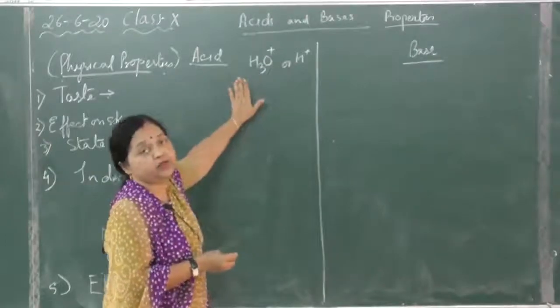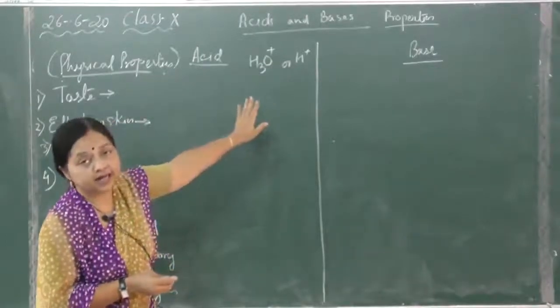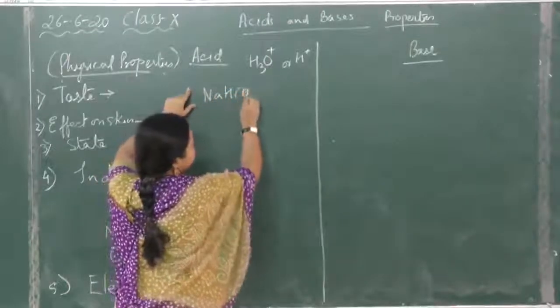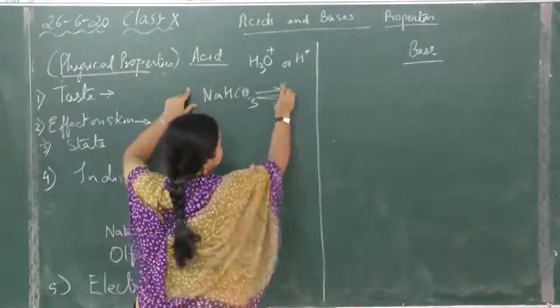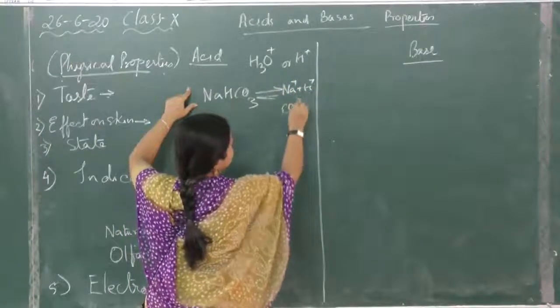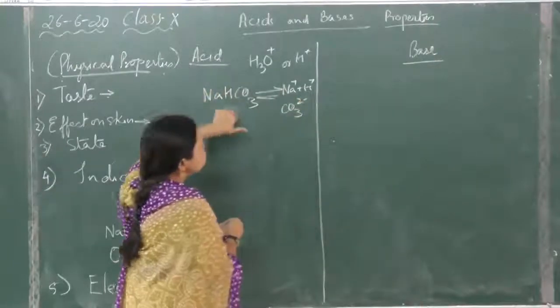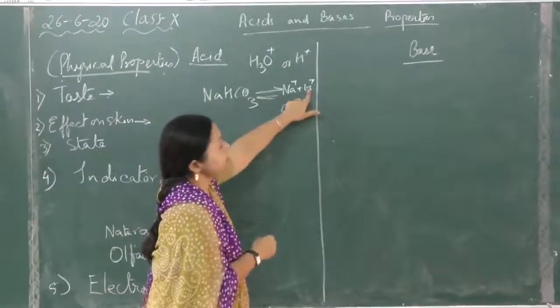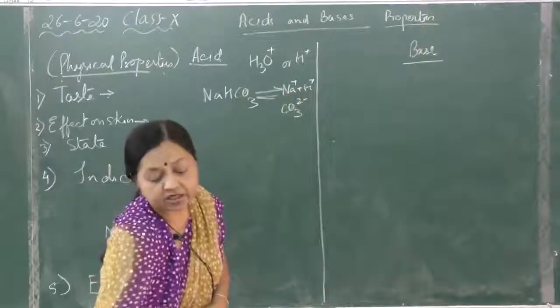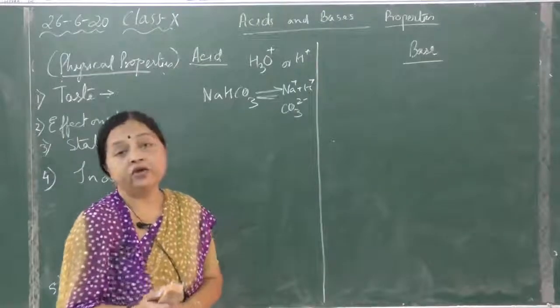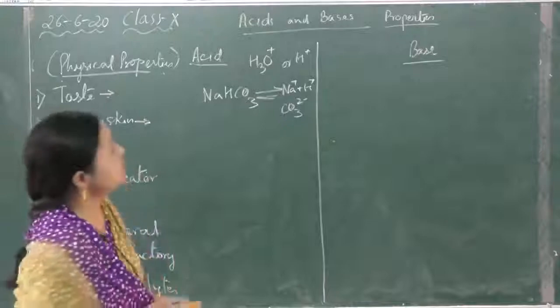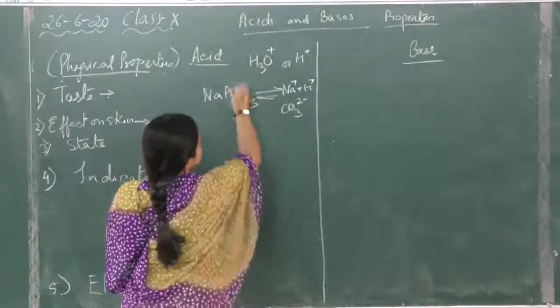I gave an example also. Suppose you take an acid salt NaHCO3, then this will dissociate as Na+ plus H+ plus CO3 2-. So in that case, this is not an acid because along with the hydrogen ion it is giving another cation. Hydrogen ion, those compounds which furnish hydrogen ion or hydronium ion as the only cation or only positive ion, those are classified as acid. This is not an acid.